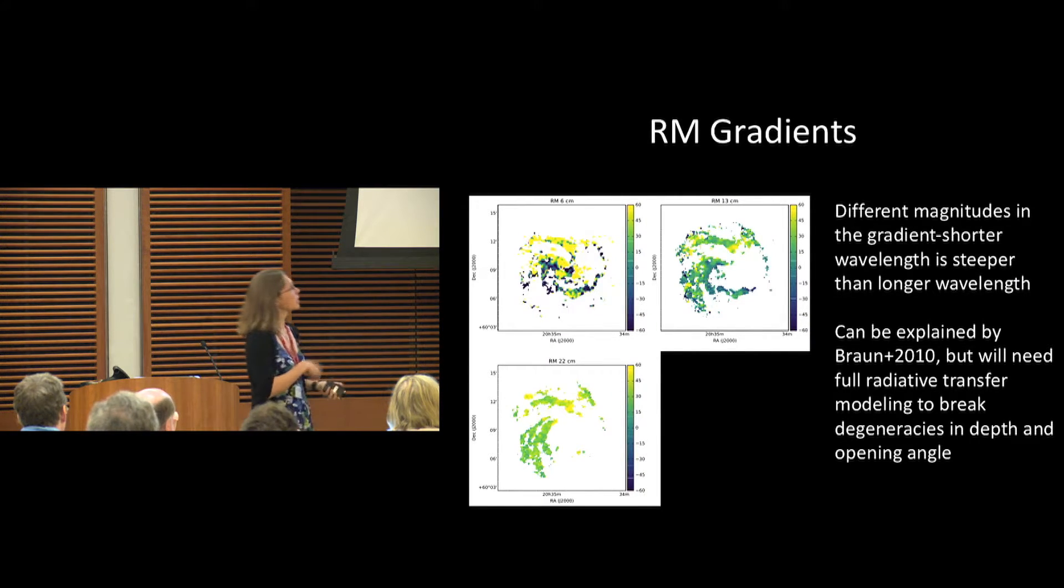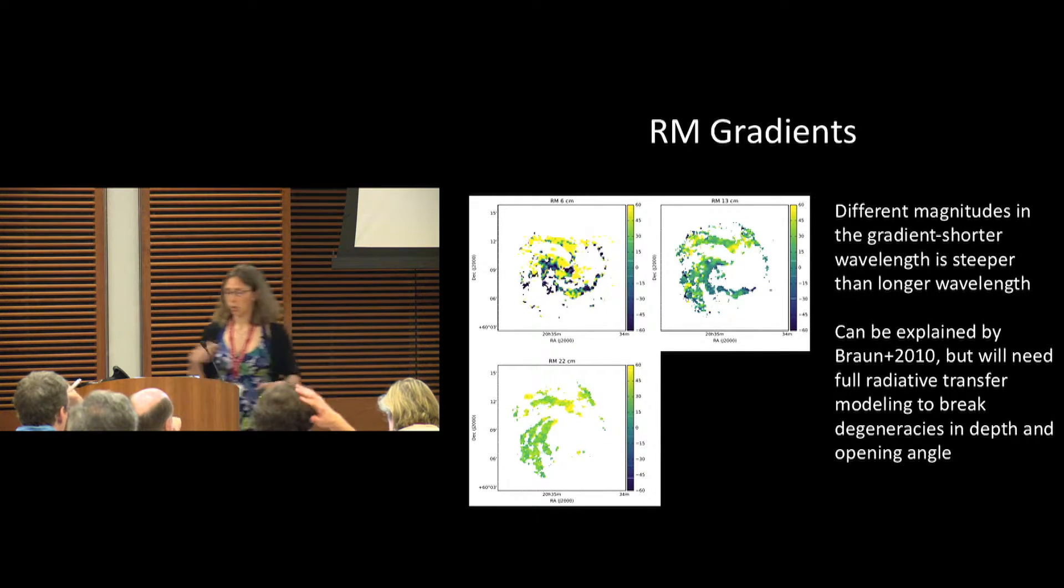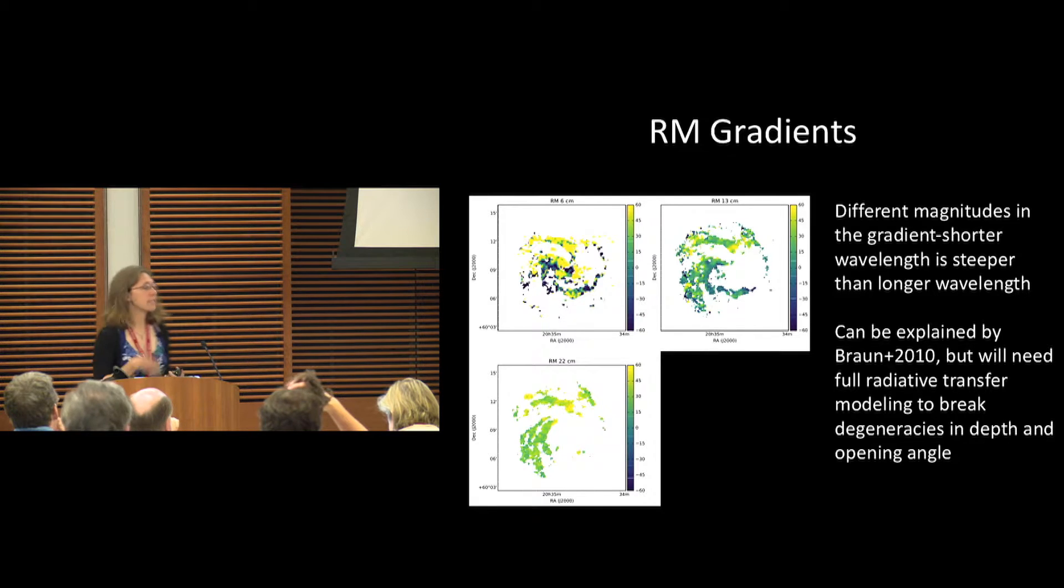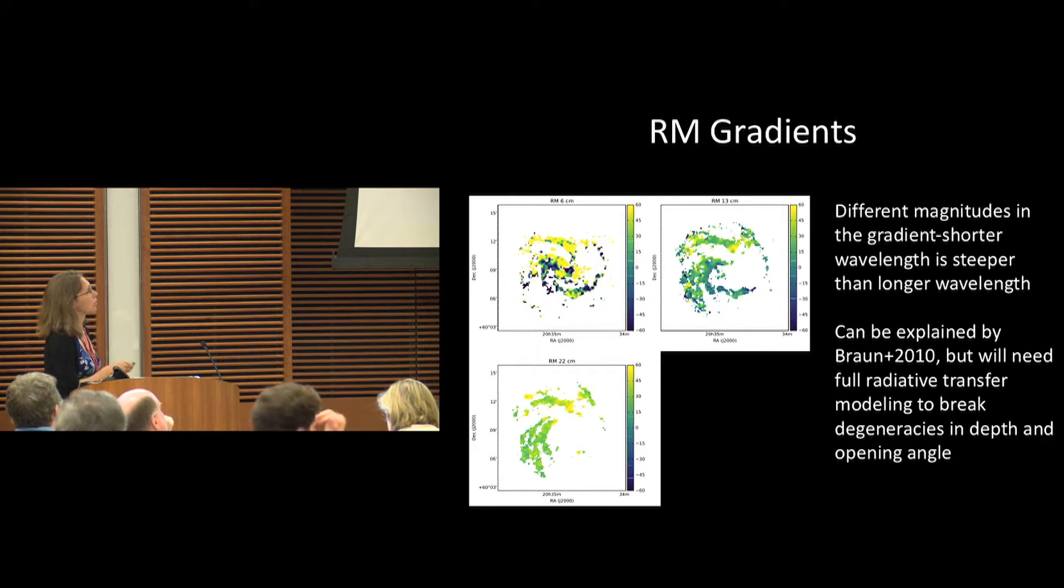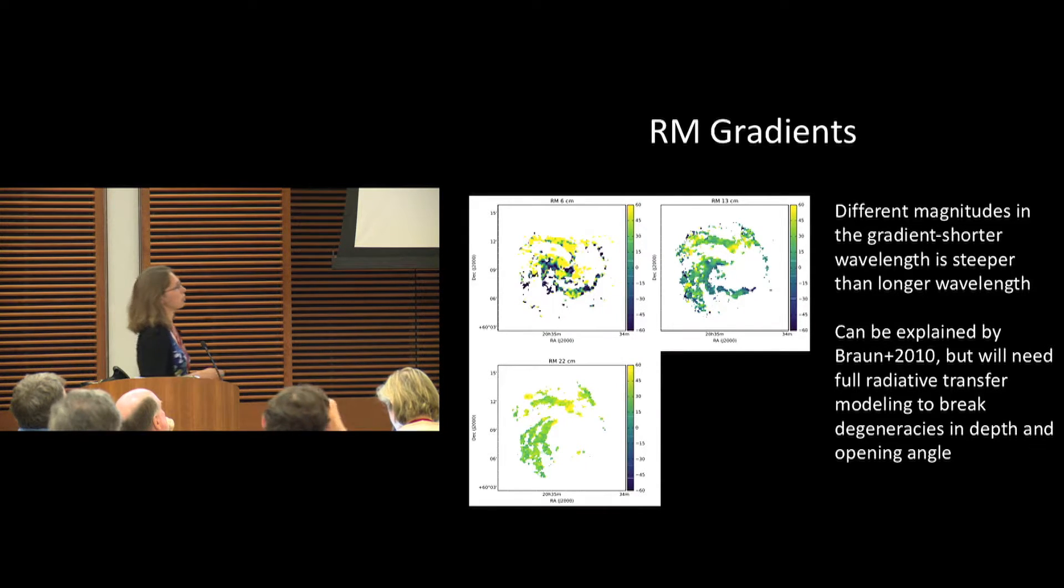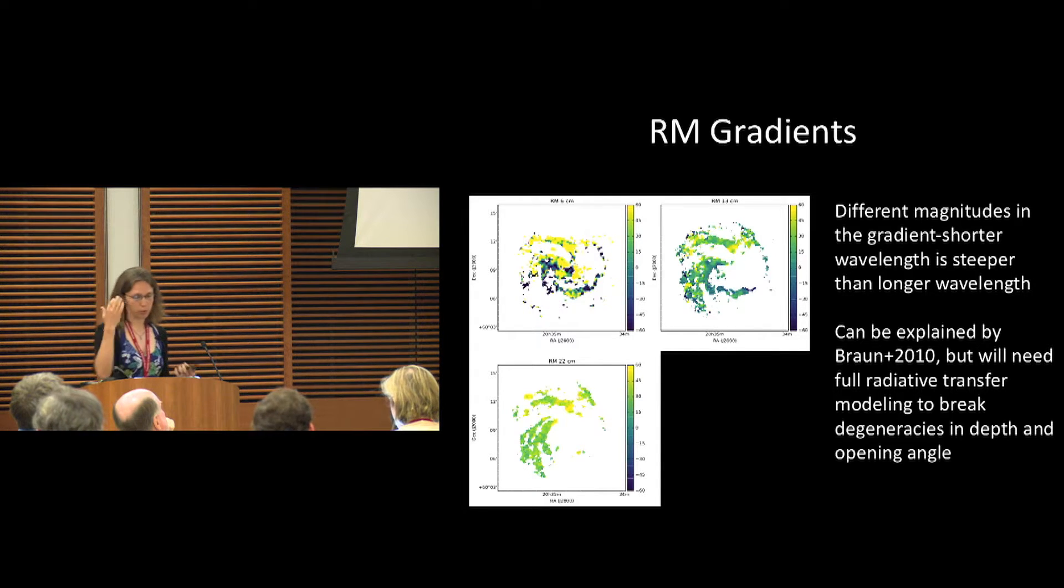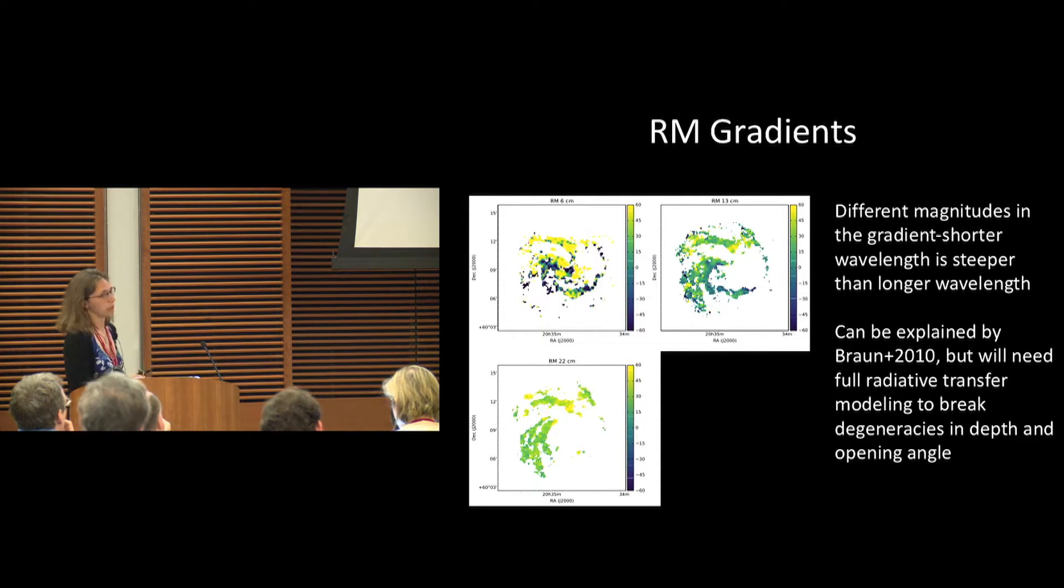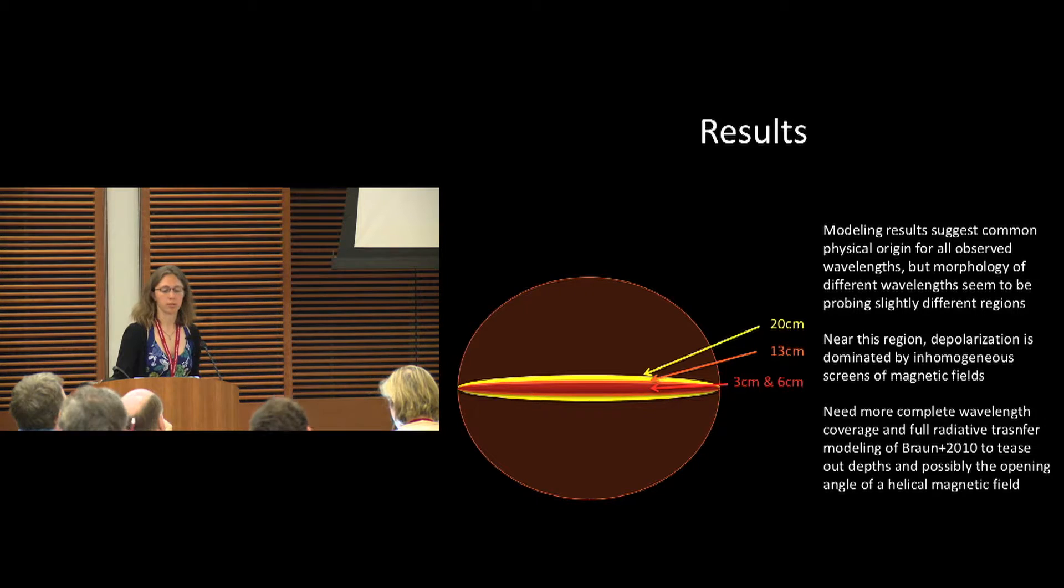If we look at the rotation measure gradients, we see that there's a stronger gradient in the rotation measure distribution at shorter wavelengths compared to longer wavelengths. We've tried to fit very simple estimates of the Braun model, but we need to do a more in-depth radiative transfer. But we can explain this gradient in rotation measure with the previous model.